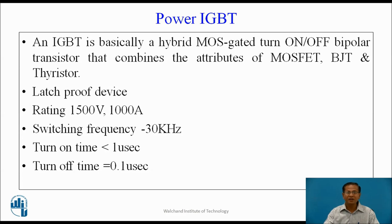IGBT is basically a hybrid MOS-gated turn-on bipolar transistor that combines the attributes of MOSFET, BJT, and thyristor. It is a latch-proof device — as long as input is present, the device remains in conducting state; once the input is removed, the device turns off. IGBTs are available up to 1500V and 1000A, used in high-power applications. The switching frequency is up to 30 kHz, turn-on time is less than 1 microsecond, and turn-off time is nearly 0.1 microsecond.